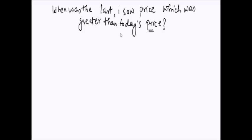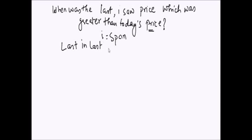We want to store the last greatest price seen. If the last price seen was greater than today's, subtract that day's index from today's index to get the span. If it was less, go back further to find the first price greater than today's. This access pattern is LIFO, which means a stack is the right data structure.